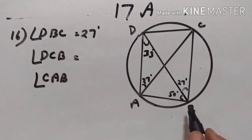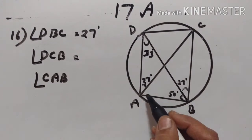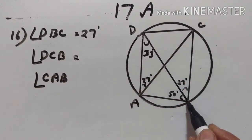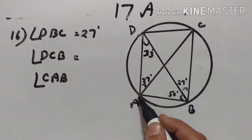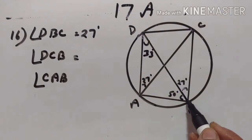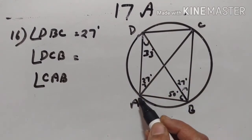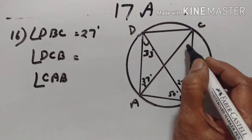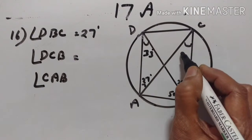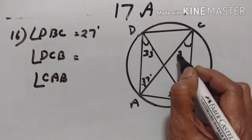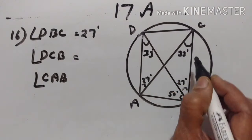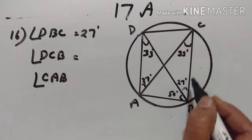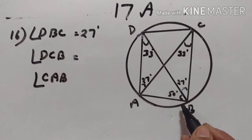Angle DCB. Angle ADB and angle ACB are angles in the same segment. Therefore, angle ACB is equal to 33 degrees.